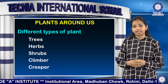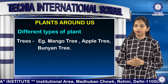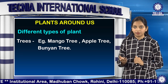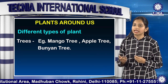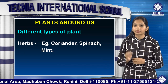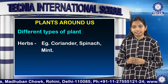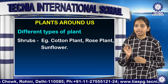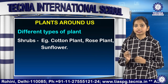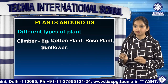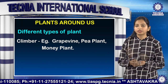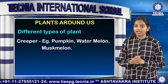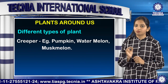Trees — for example apple tree, banyan tree etc. Herbs like coriander, mint etc. Shrubs like rose plant, cotton plant etc. Climbers like money plant, pea plant etc. Creepers like pumpkin, muskmelon etc.